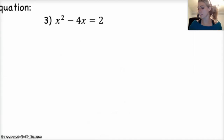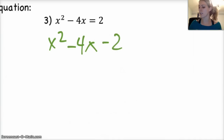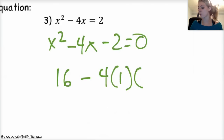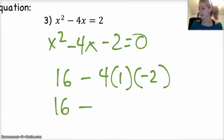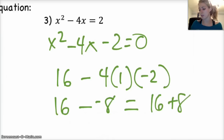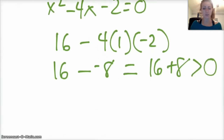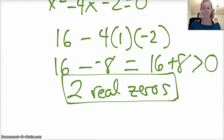Last one: x² − 4x − 2 = 2. Bring the 2 over: x² − 4x − 4 = 0. Then the discriminant: b² − 4ac = (−4)² − 4(1)(−2) = 16 − (−8) = 16 + 8 = 24. It doesn't matter exactly what it is — it's positive, greater than 0. So we know we have two real zeros. Good job, see you later!